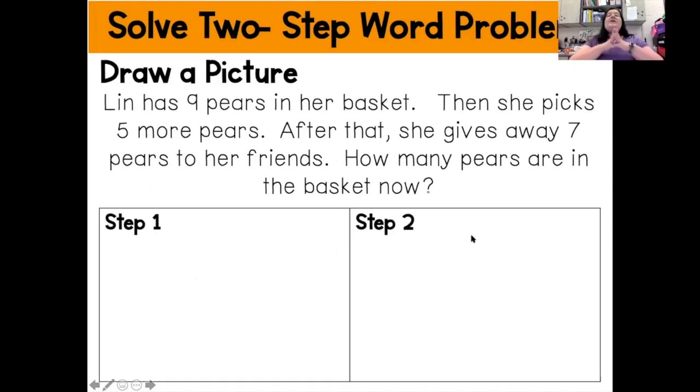So when I am solving two-step word problems, I'm going to be using the CUBES method like I do when I solve a one-step word problem. And remember, CUBES is C, circle the numbers, U, underline the question, B, box in the keywords or clue words, E, evaluate, so figure out what I'm trying to do. And then S, I'm going to solve and check my answer.